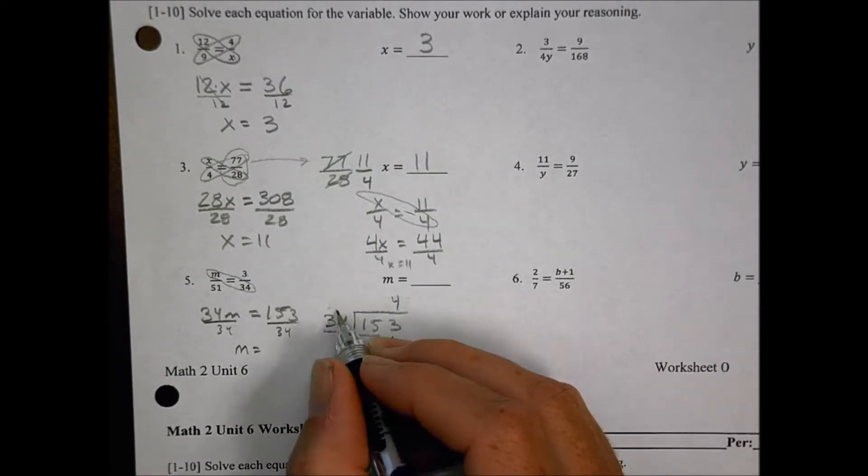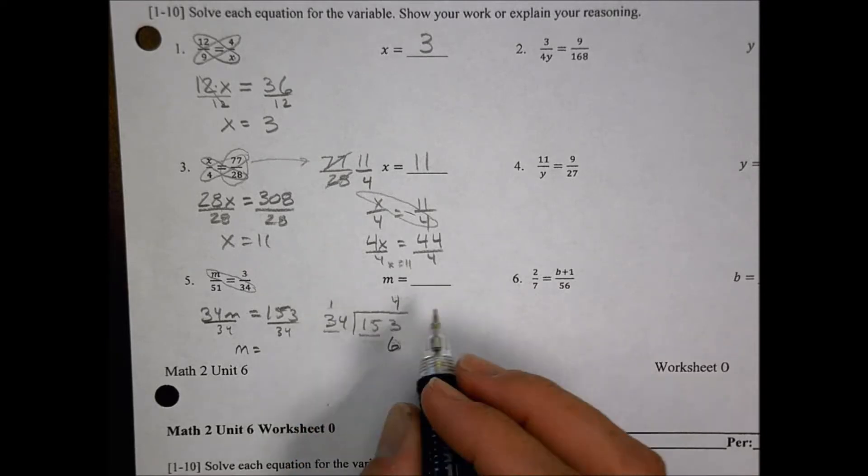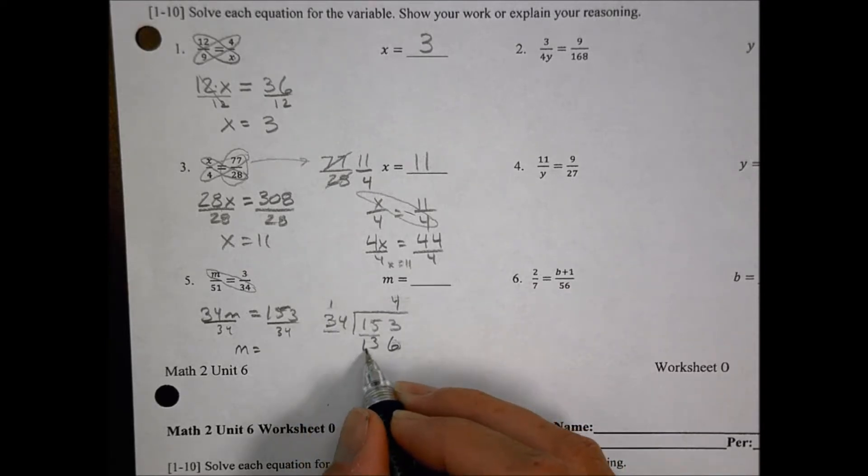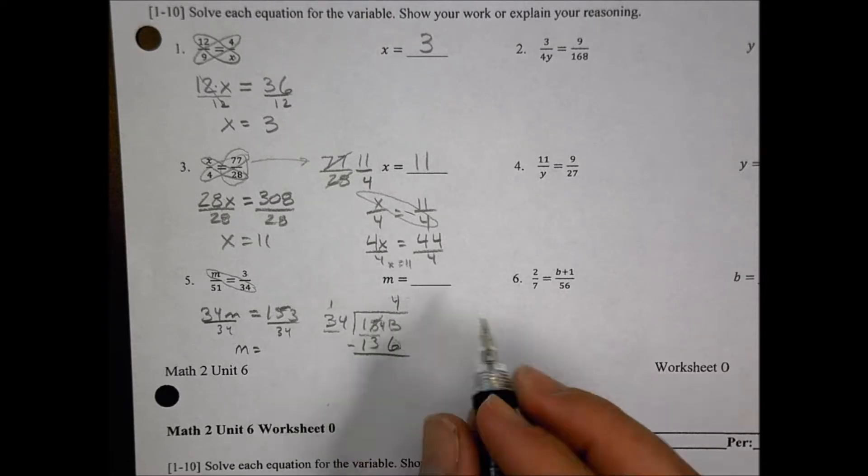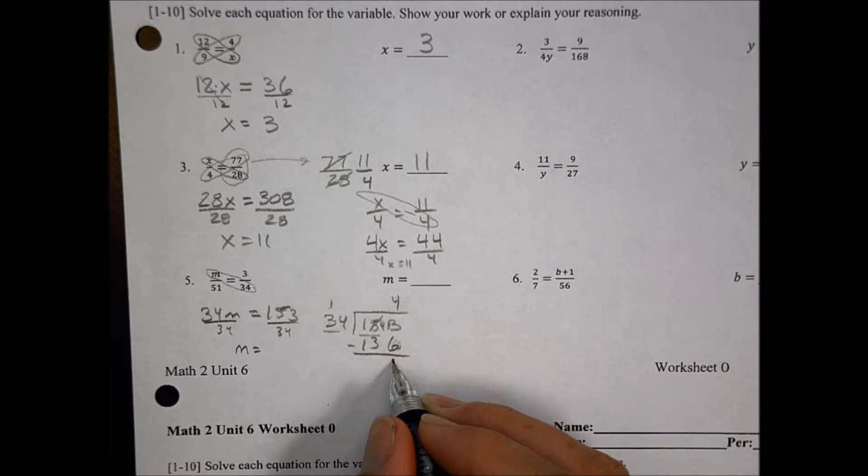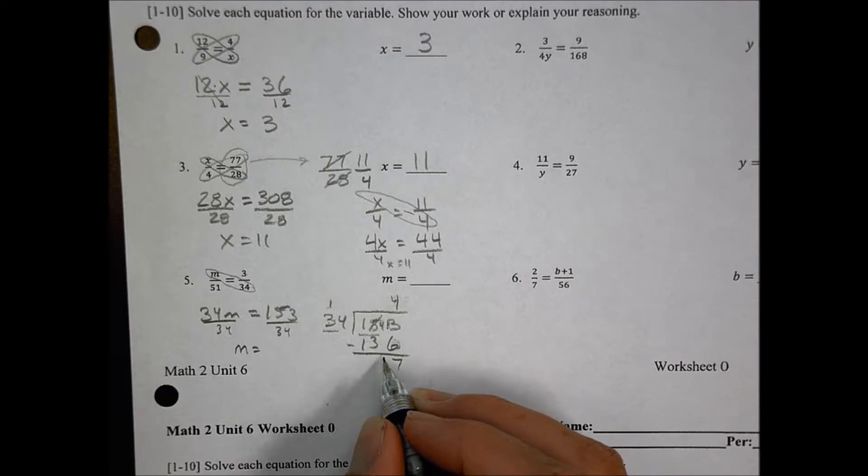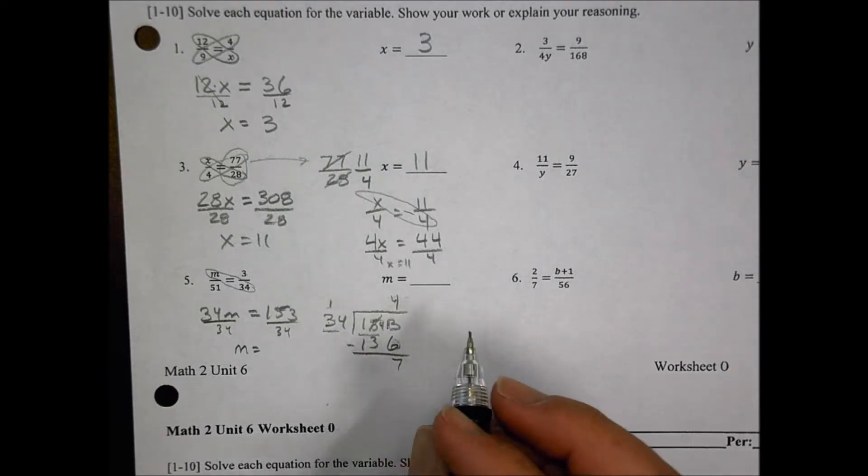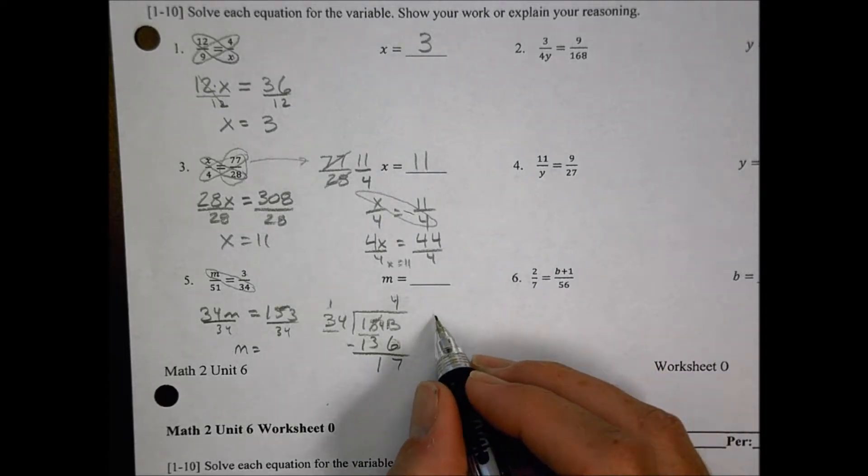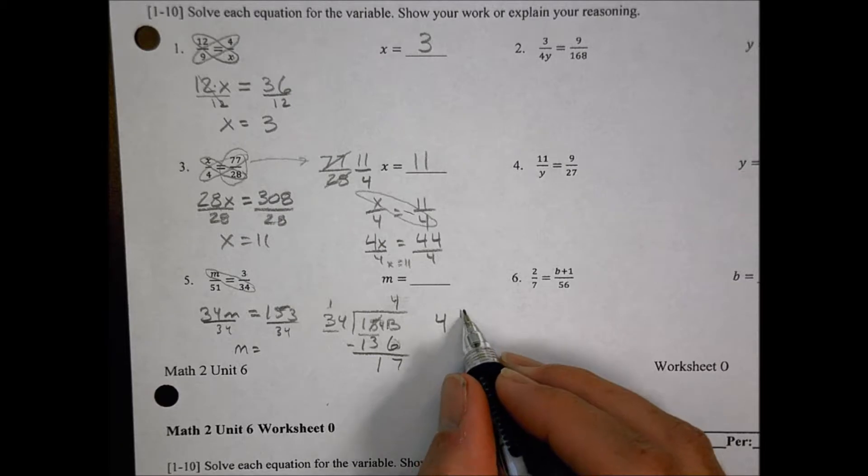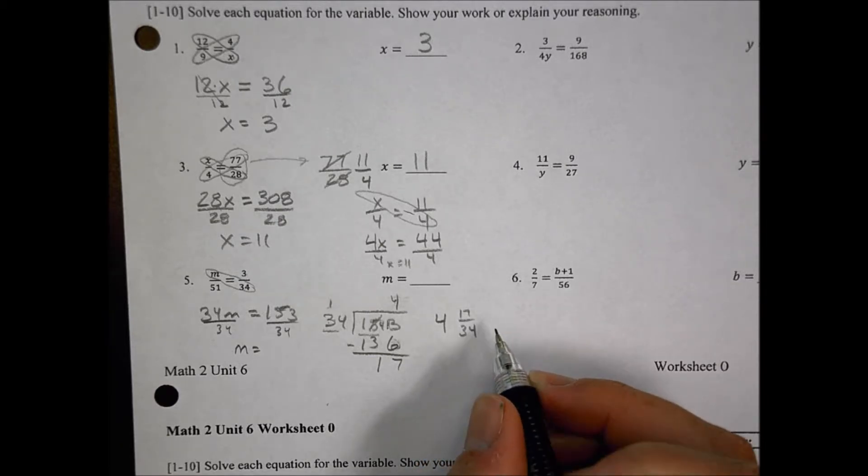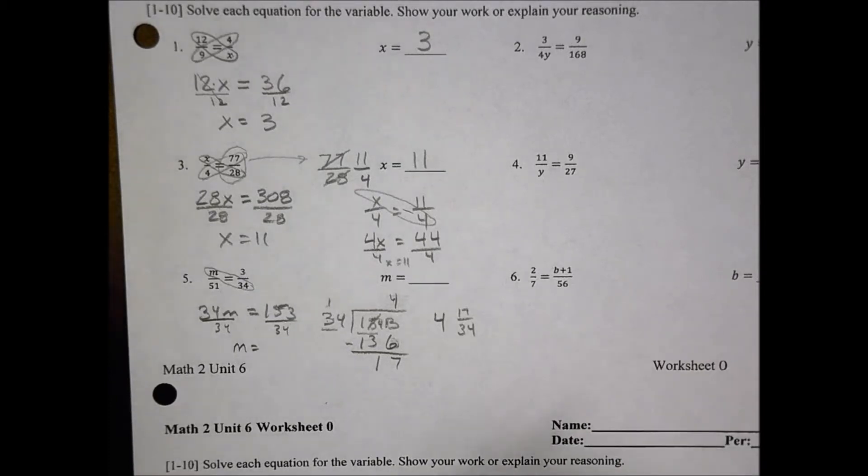And 4 times 4 is 16, carry the 1, 4 times 3 is 12, plus 1 more is 13. Now we subtract. So I have to borrow from here and make that a 4. That becomes a 13, 13 minus 6 is 7, 4 minus 3 is 1. And so I have 1 left over there. So I know that I have 4, and I have 17, 34 is what it seems to look like right there. So 4 and 17, 34.